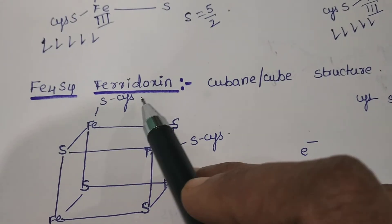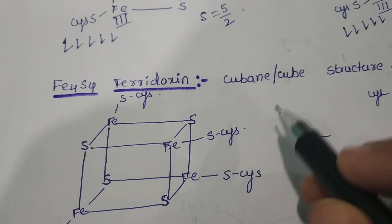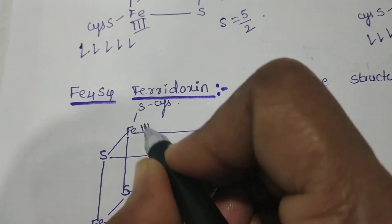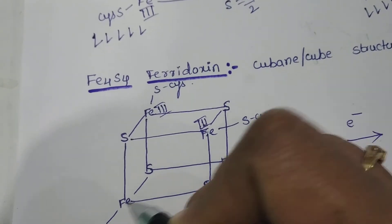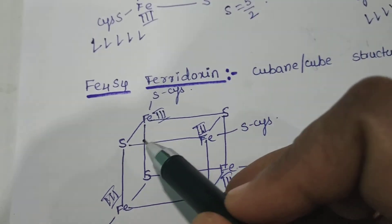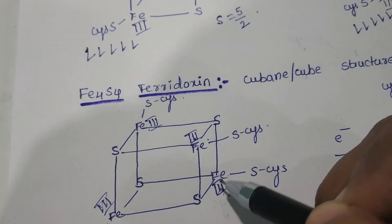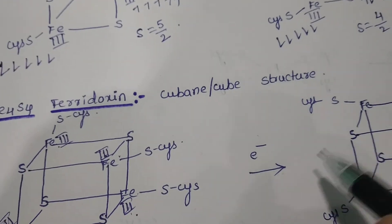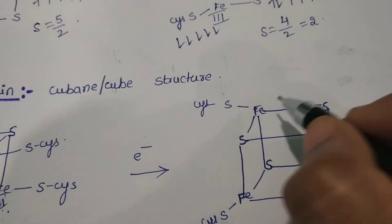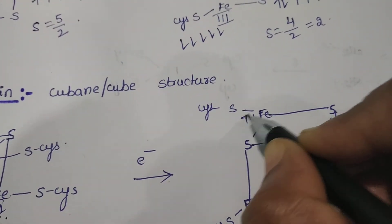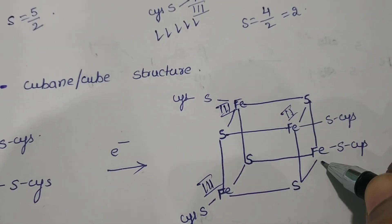This is Fe4S4 ferredoxin. It has a cubane structure. Here all four Fe atoms are in the plus-three oxidation state (+3, +3, +3, +3). The spins of opposing irons cancel each other — this spin cancelled by this one, that spin cancelled by that one — so the oxidized form is diamagnetic. It will take one electron, and this is the reduced form of the Fe4S4 structure, where one iron changes to the plus-two oxidation state.